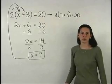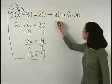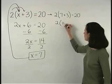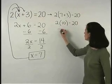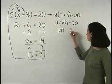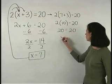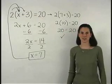7 plus 3 is 10, so we have 2 times 10 equals 20, or 20 equals 20, which is a true statement. So our answer checks.